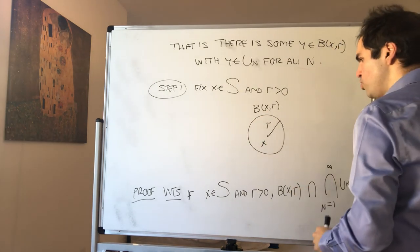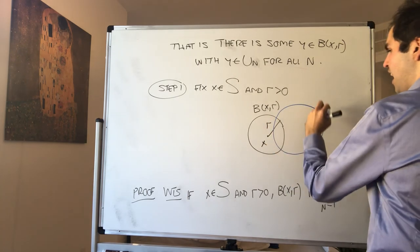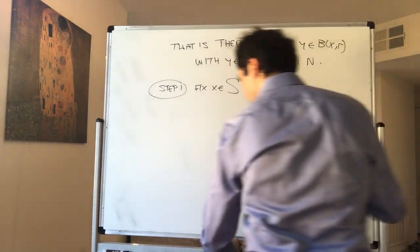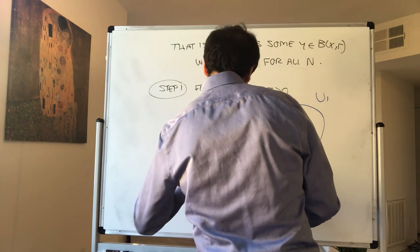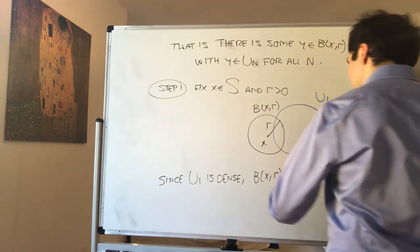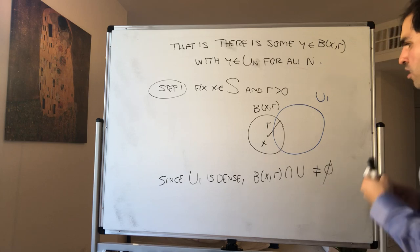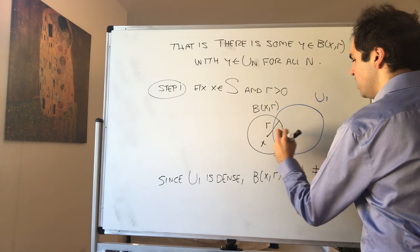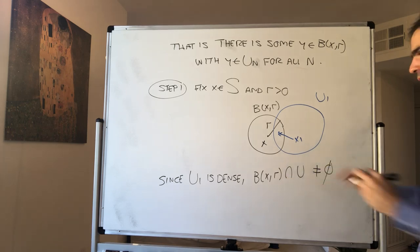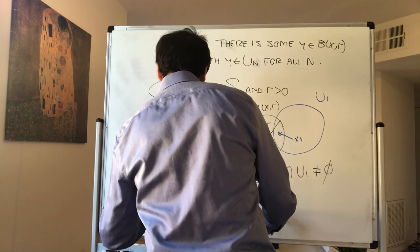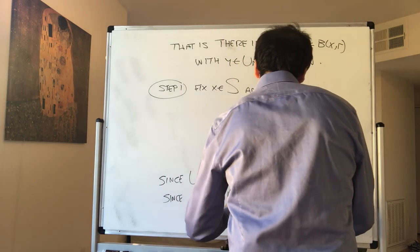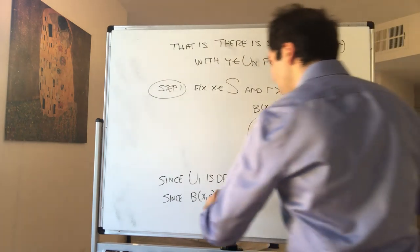First of all, since u1 is dense, it has to intersect that ball. That's by definition of denseness. So since u1 is dense, the ball centered at x radius r intersect with u1 is non-empty. So in particular, there is some point x1 in the intersection. But we can say more than that because not only is this dense, it's also open. But since B(x,r) intersect u1 is open, because the ball is open and u1 is open by assumption.